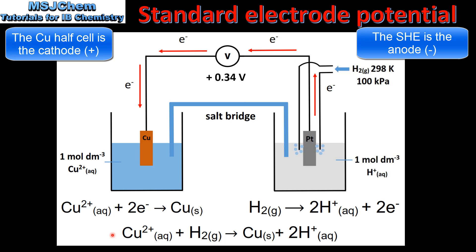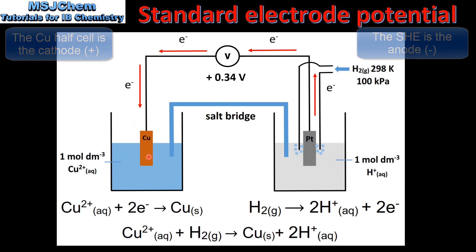And here we have the overall equation for the reaction. If we look at the reading on the voltmeter we have a voltage of positive 0.34 volts. This is the standard electrode potential of the copper half cell.